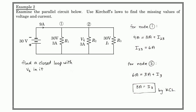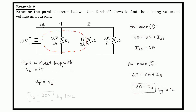We need to find V2, and we need to find a closed loop to apply Kirchhoff's Voltage Law. Here's a closed loop — current can travel along this path, indicated by the curly arrow. Along this path, the voltage increase of 30 volts has to equal the voltage decreases. There's only one voltage decrease here, and that's V2, because along this path the only resistor is R2. So V2 is equal to 30 volts, by Kirchhoff's Voltage Law.